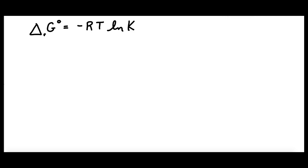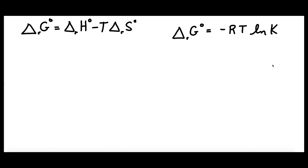We saw earlier that the equilibrium constant is related to delta G standard. So first let's look at the effect of different temperatures on delta G standard. We see in the left-hand equation that the temperature dependence of delta G standard is going to depend on the signs of delta H standard and delta S standard. Let's make a table.